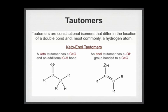A keto tautomer has a carbon-oxygen double bond and an additional carbon-hydrogen bond. An enol tautomer has a hydroxyl group bonded to a carbon-carbon double bond.